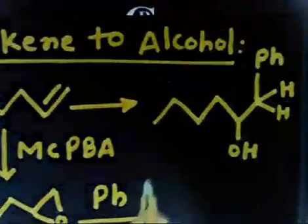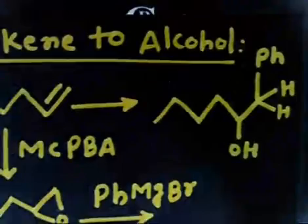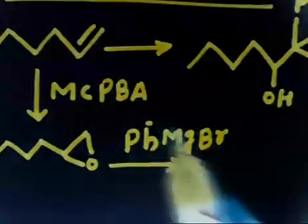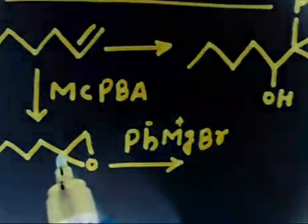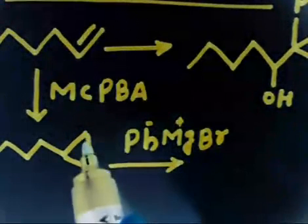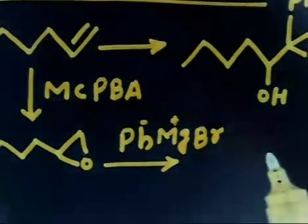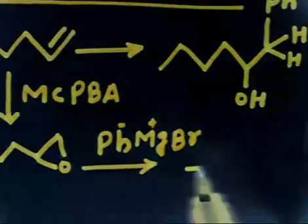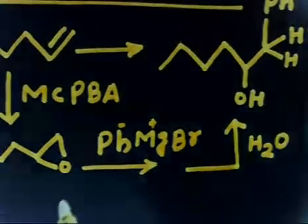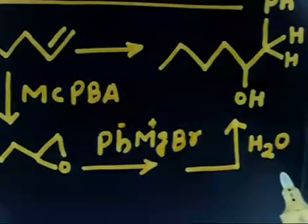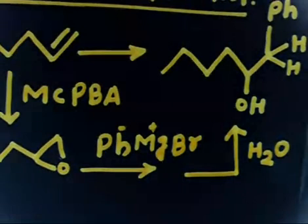Then if you treat with the Grignard reagent PhMgBr, the Ph⁻ will attack on carbon one — this is a secondary carbon, so attack happens SN2-like. The epoxide opens, giving you O⁻. Then if you add H₂O for hydrolysis, the O⁻ takes H⁺ from water, finally forming the desired product.